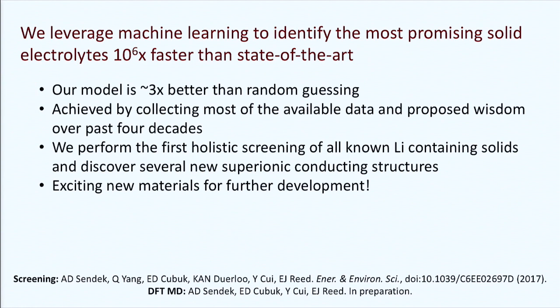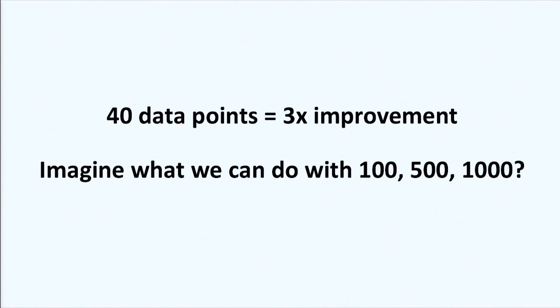In conclusion, we're able to leverage machine learning to do the first large-scale holistic screening of lithium-ion conductors, achieving about 3x better performance than random guessing based on just 40 data points. We have several new exciting materials for further development, as well as exciting new design principles. Looking ahead, what can we do with 500 or 1,000 data points? There's a really exciting future in store if we harness our materials data. Thank you.